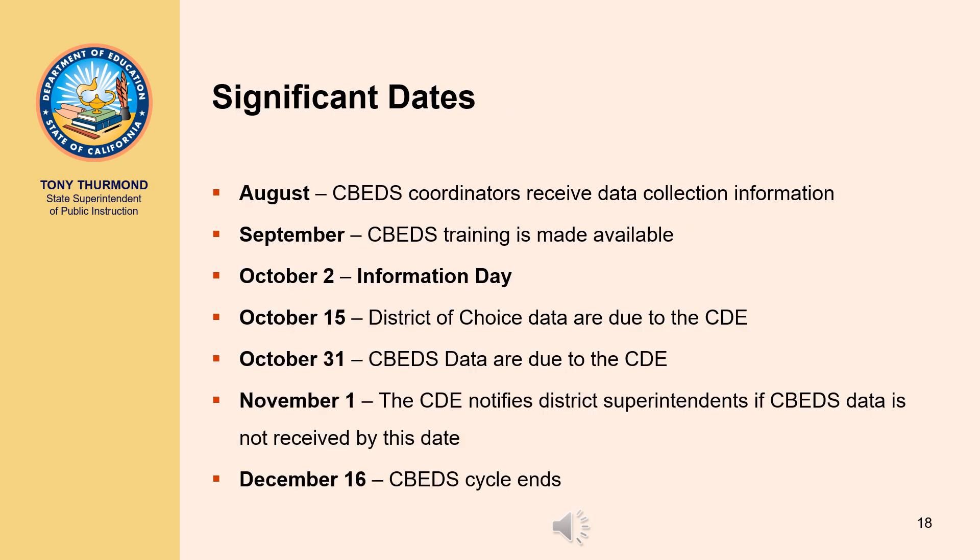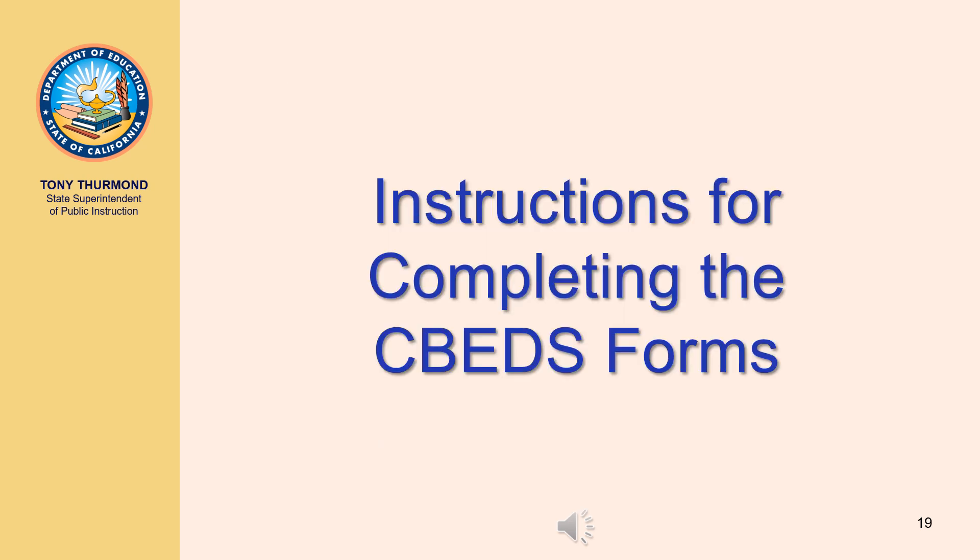The following are significant dates for CBEDS. CBEDS coordinators receive data collection information in August. CBEDS training is made available online in September. Information day is October 2nd. On October 15th, District of Choice data are due to the CDE for participating districts. CBEDS data are due to the CDE on or before October 31st. On November 1st, the CDE will notify LEA superintendents and independently reporting charter school administrators if CBEDS data is not received by the deadline. The CBEDS cycle ends and data is certified statewide on December 15th.